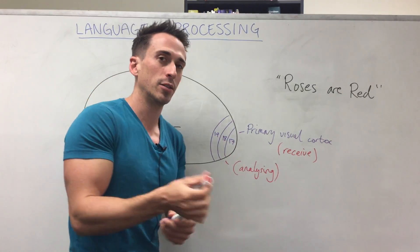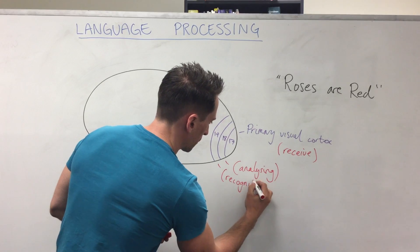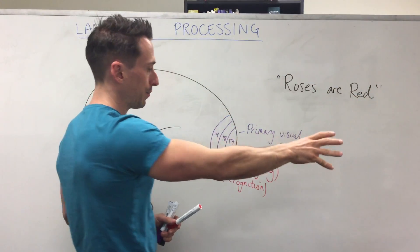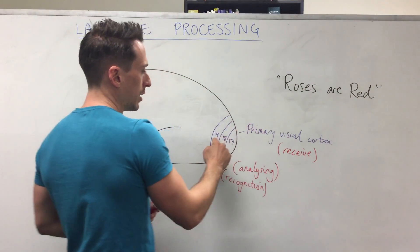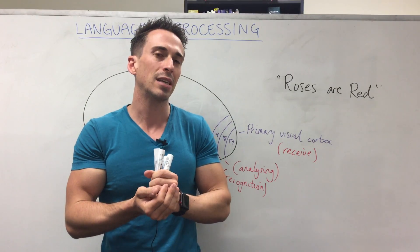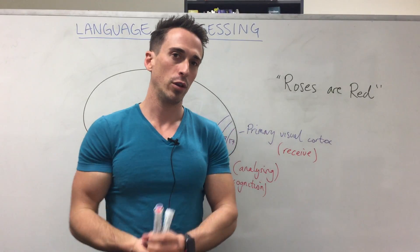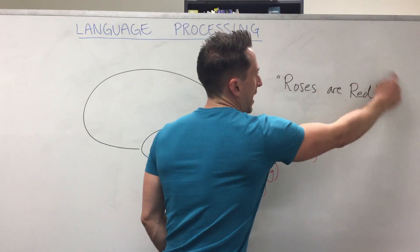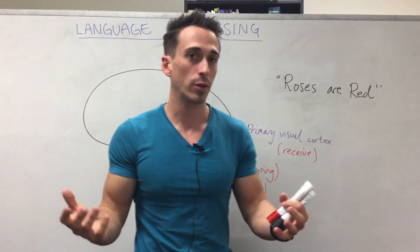Area 18 then throws that information to the next level of processing: Brodmann's area 19, which is associated with recognition — recognising what's been written. So to recap: the primary visual cortex is associated with just seeing something is there. Then area 18 analyses the lines, length, colour, and spaces. Then area 19 takes all that information and starts to associate it with anything you've seen before — do these words make sense? This is where you recognise, "that says roses, that says red." But they still don't have any meaning for you. You've recognised them, but they don't make sense yet.